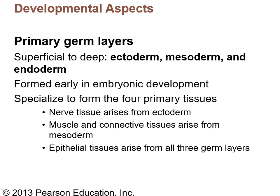All tissues in the body originate from the primary germ layers formed early in embryonic development when the fertilized egg evolves into a structure called a gastrula. There are three germ layers: ectoderm, mesoderm, and endoderm. Nervous tissue arises from the ectoderm. Muscle and connective tissues arise from the mesoderm — meso means middle and those layers are in the middle. Epithelial tissue can arise from all three germ layers. That completes chapter four.